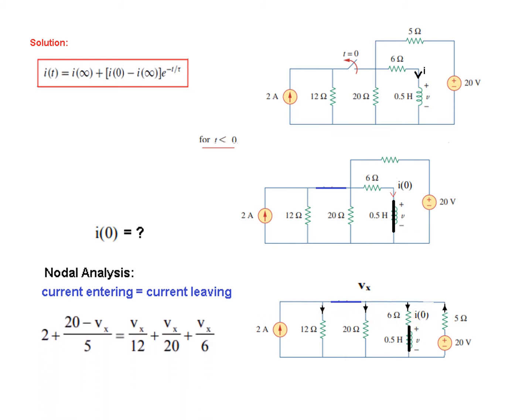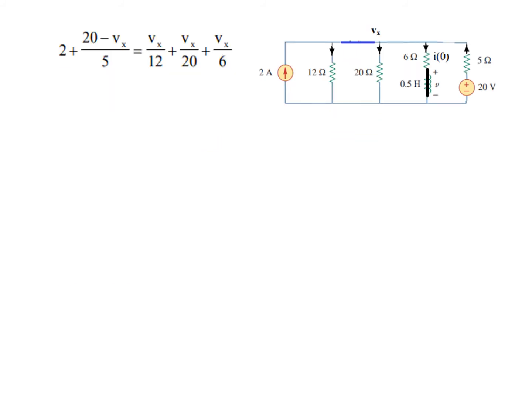So we write the equation: 2 plus this current can be written as (20 minus Vx) divided by 5. If you have difficulty understanding this, I recommend that you watch my video on nodal analysis. On the right side, current leaving: Vx/12 plus Vx/20 plus Vx/6.